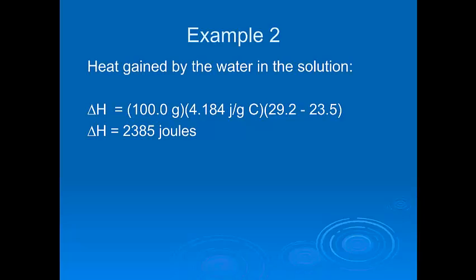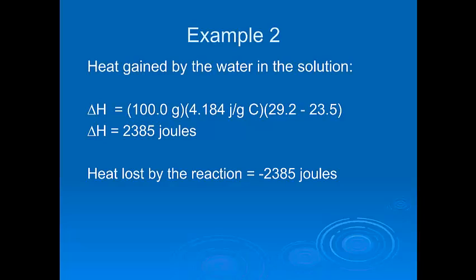Notice delta H has a positive sign because delta T has a positive sign — the water was gaining the heat, so it's endothermic from the water's perspective. So how much heat was lost by the reaction? Well, if the water gained 2,385 joules, then the heat lost by the reaction was negative 2,385 joules — we just put a negative sign in front of it. That's how much energy this specific reaction produced.